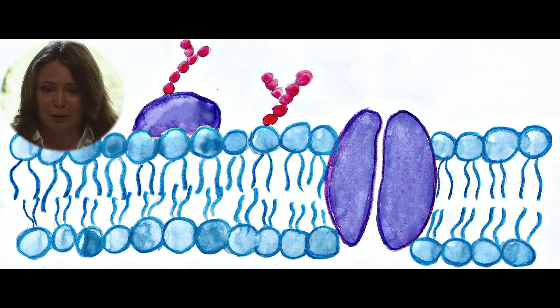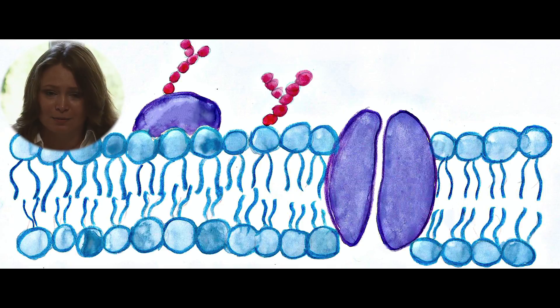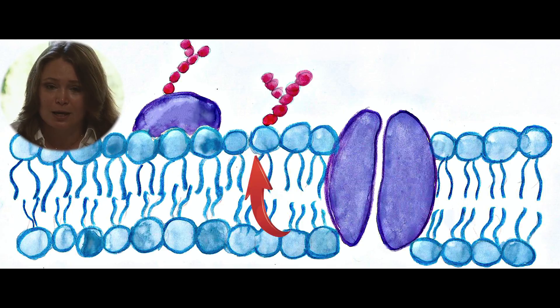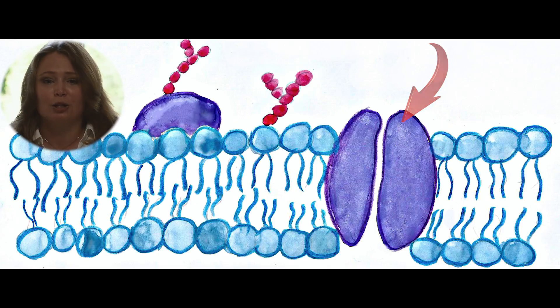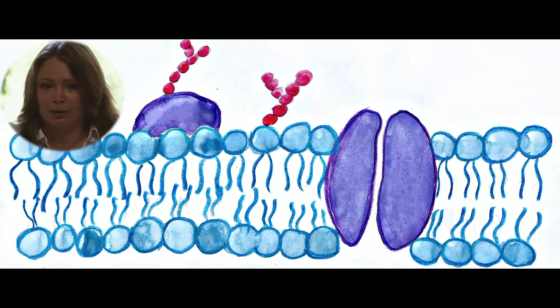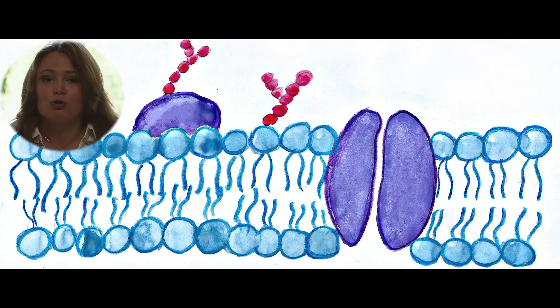The cell membrane or plasma lemma surrounds the cell and holds all the organelles. It consists of two layers of phospholipids and proteins. It is located between the environment and internal space of the cell, so substances are transported through the membrane. The membrane does not let just any substances into the cell, so it regulates what should get in and what should not.